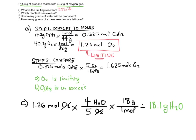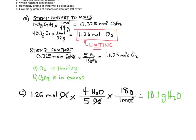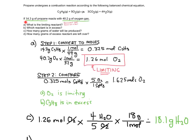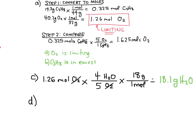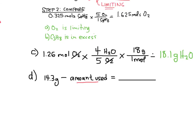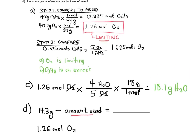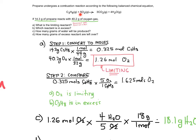Finally, part D asks how many grams of excess reactant are left over. The one in excess is propane. I want to figure out how much propane was actually used up in this reaction. I'll take the amount I started with — 14.3 grams — and subtract the amount that was used. I know I used up all the oxygen because it was limiting: 1.26 moles of O2. According to the recipe, for every five moles of oxygen I need one mole of propane.